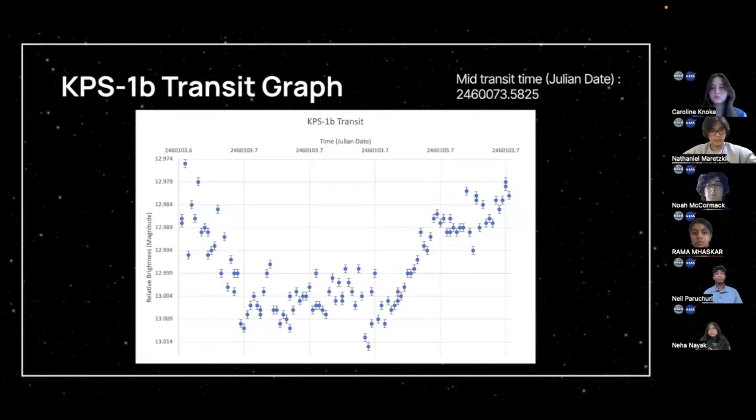And this is our final one that we did, which was KPS 1b. This is its transit graph. As you can see, it's a little more shaky than the other ones, but there is still a clear transit there because the dip is still much more than all the error bars on all of our points. And the mid-transit time was 2460073.5825.